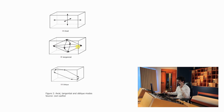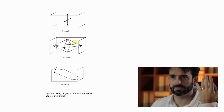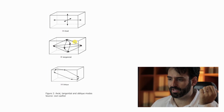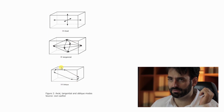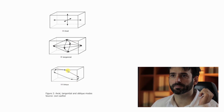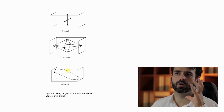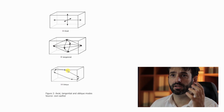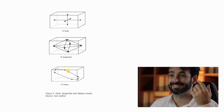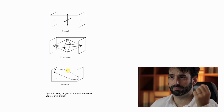The tangential modes are a result of sound reflected from four surfaces in the room. And finally, oblique mode represents the rays that reflect off six surfaces, as we can see here.